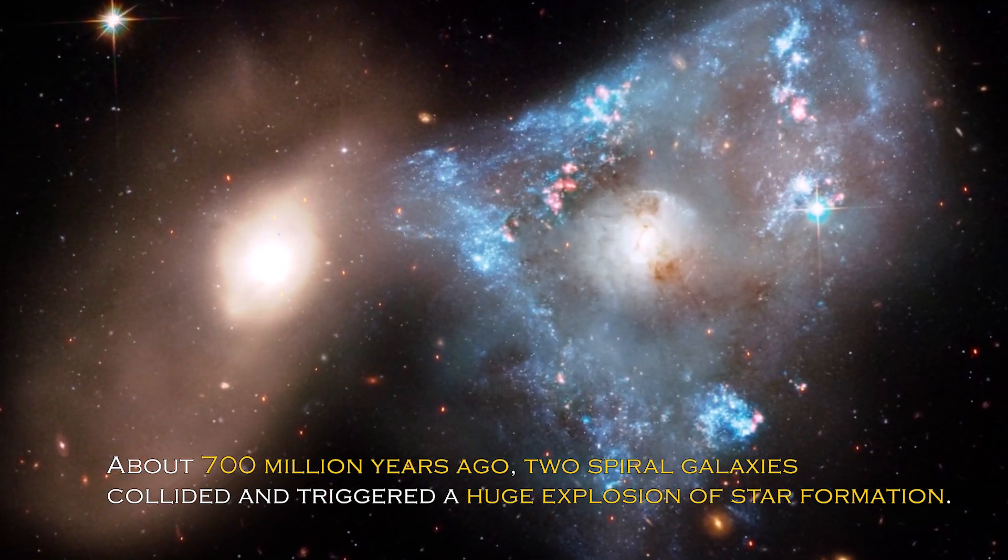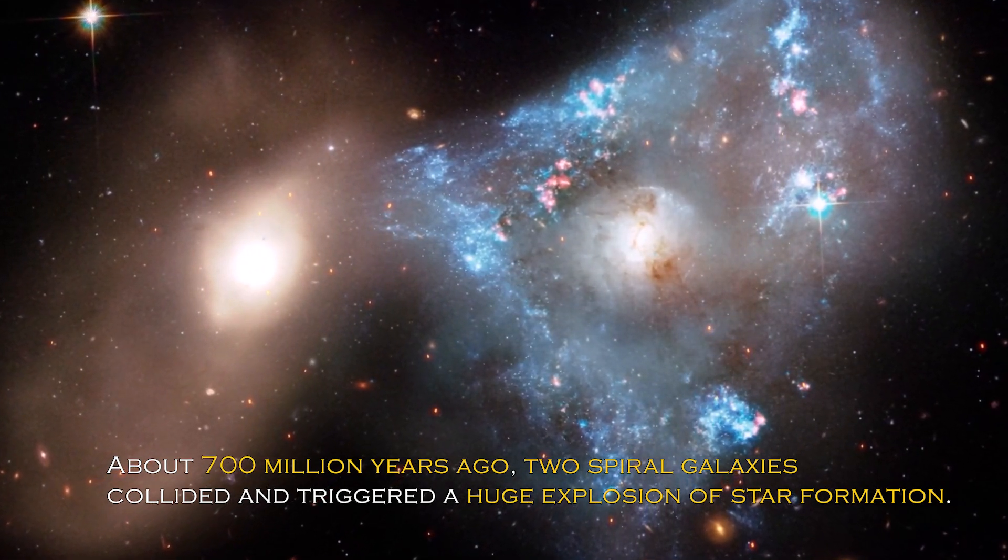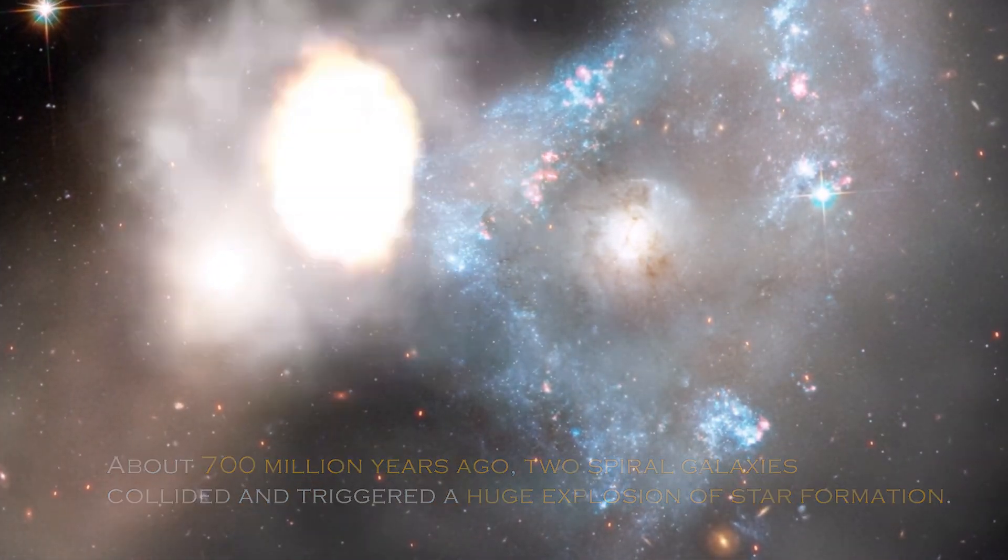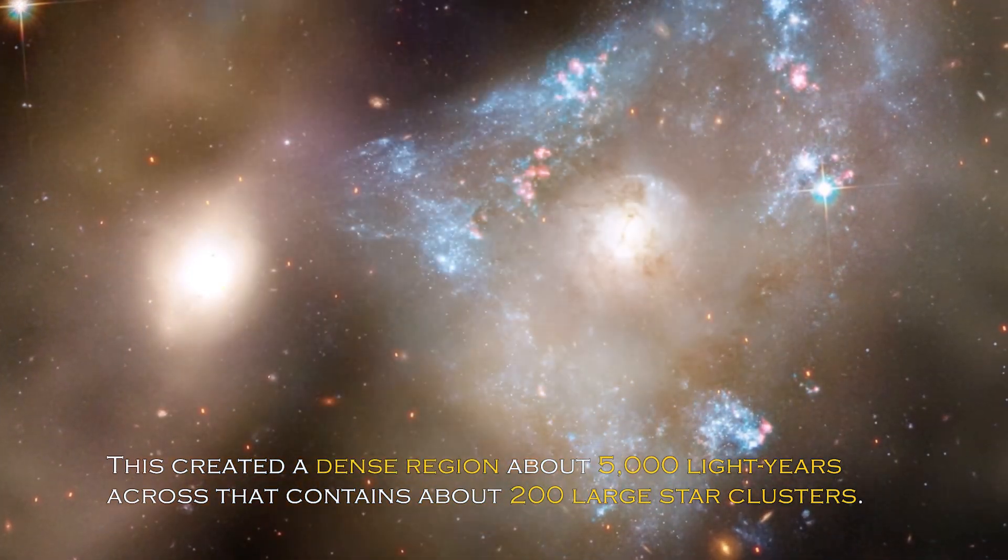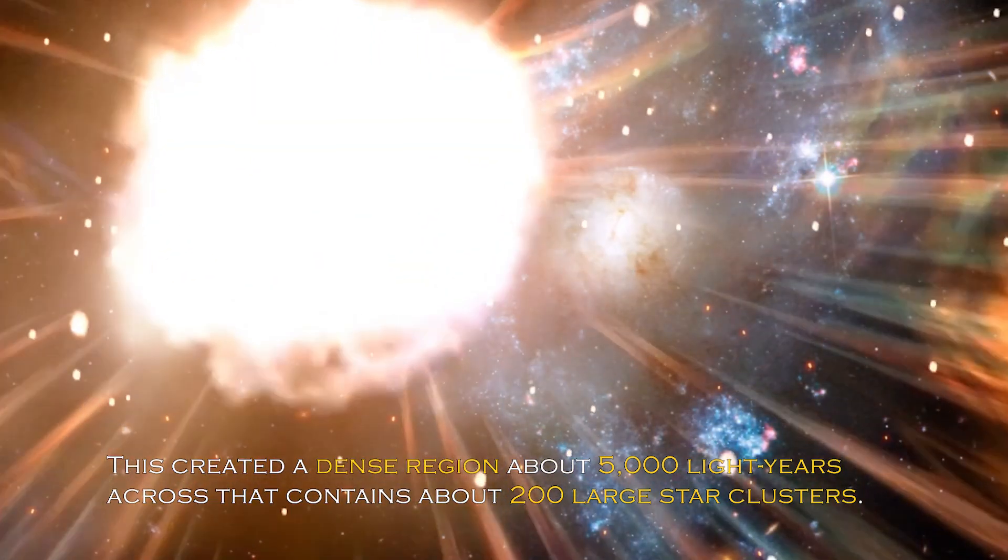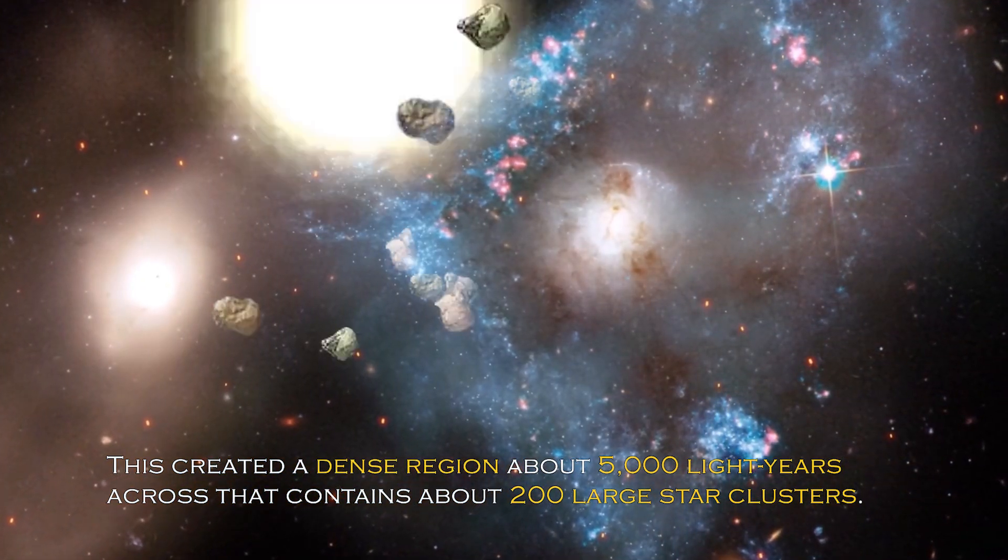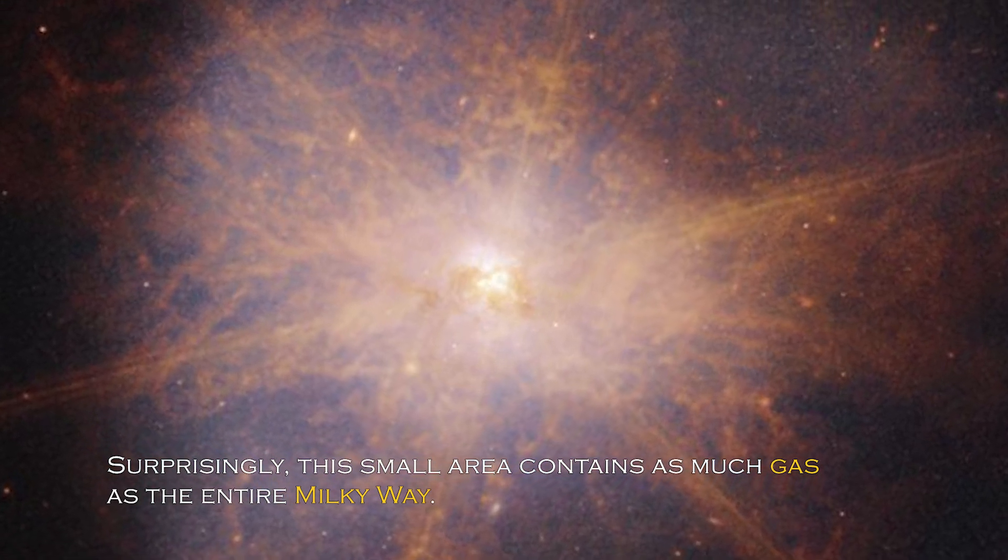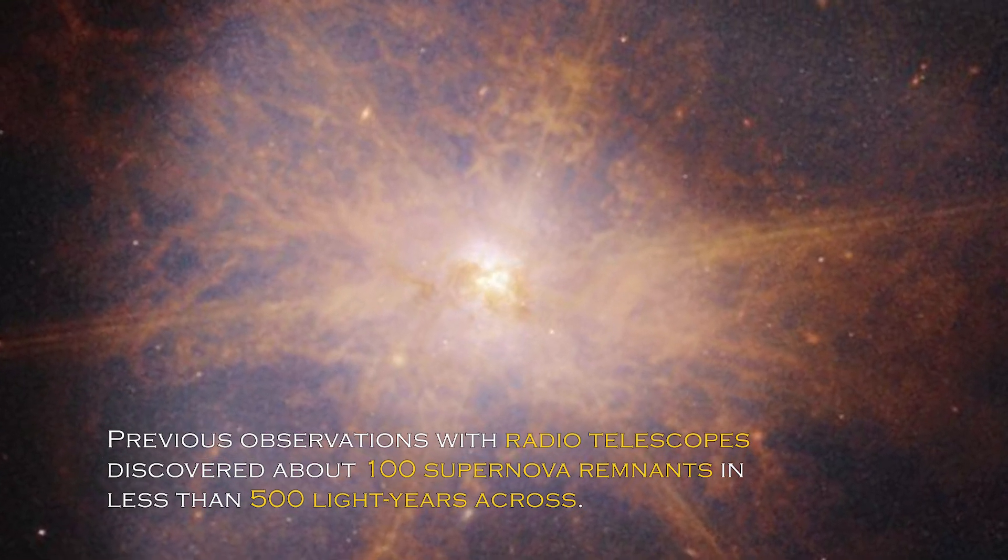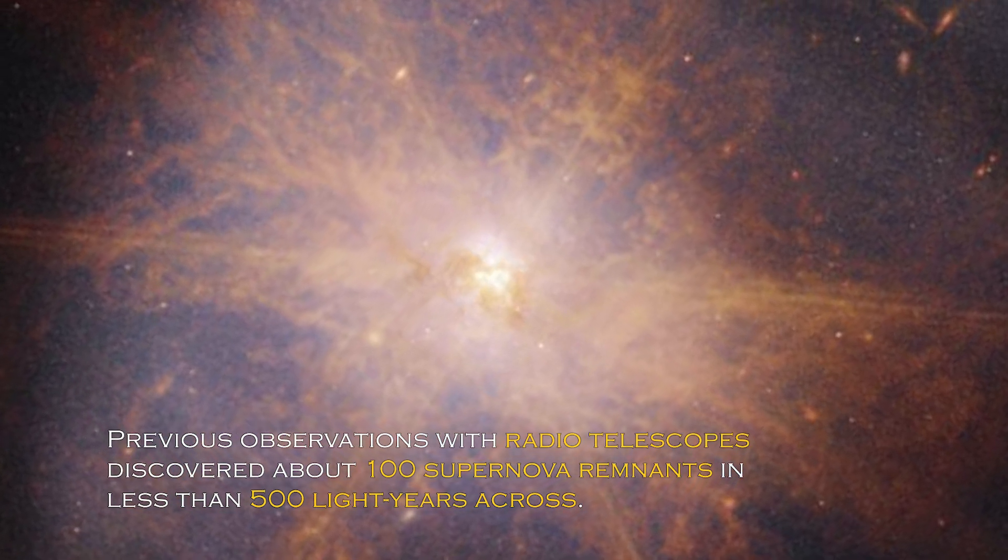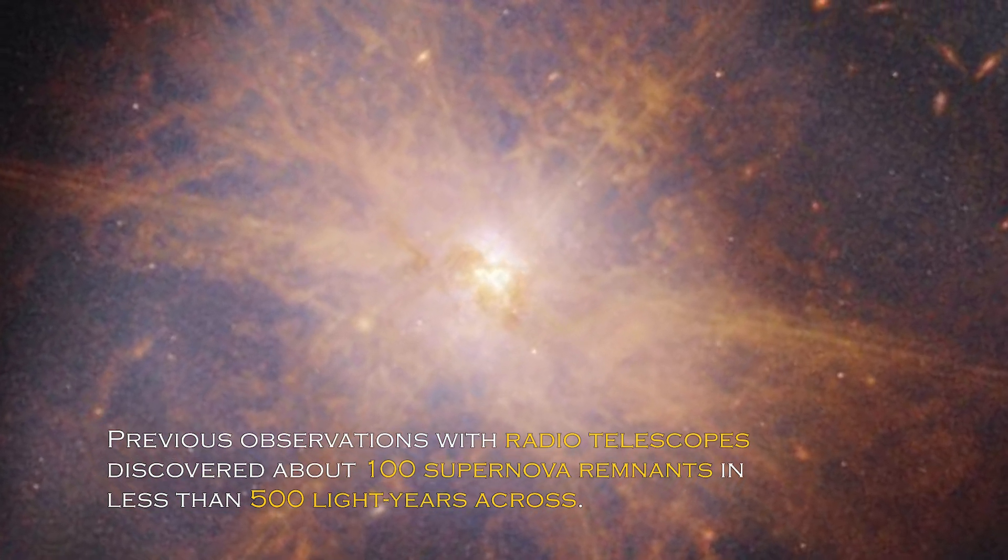About 700 million years ago, two spiral galaxies collided and triggered a huge explosion of star formation. This created a dense region about 5,000 light-years across that contains about 200 large star clusters. Surprisingly, this small area contains as much gas as the entire Milky Way.